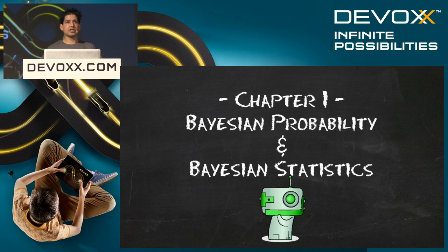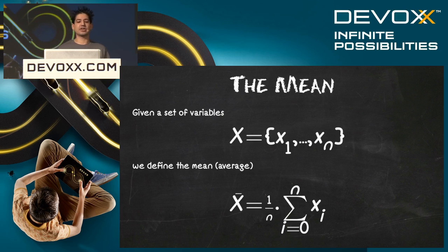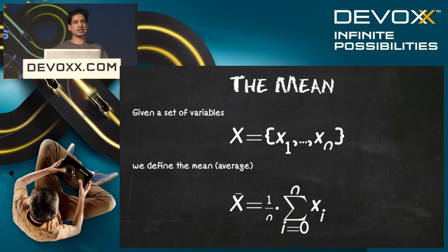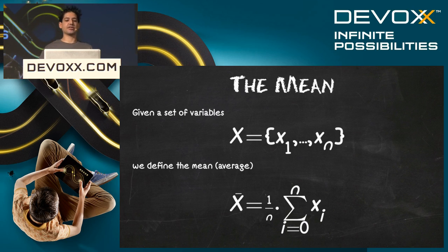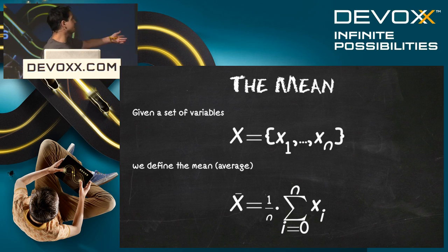Chapter one: Bayesian probability and Bayesian statistics. We're going to start off with a very simple definition — the mean, the average. Given a set of variables 1, 2, 3, 4, 5, we add them all up, we divide by the number of variables, and that's the average. We have this lovely sigma notation, which just means the sum of everything from i=0 up to n.